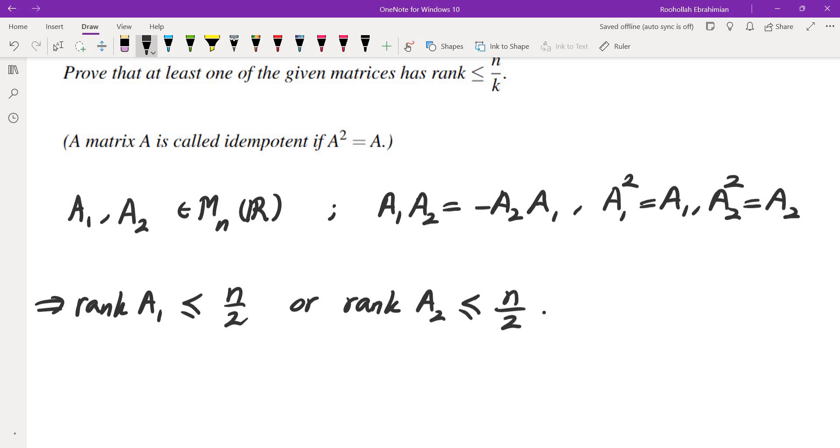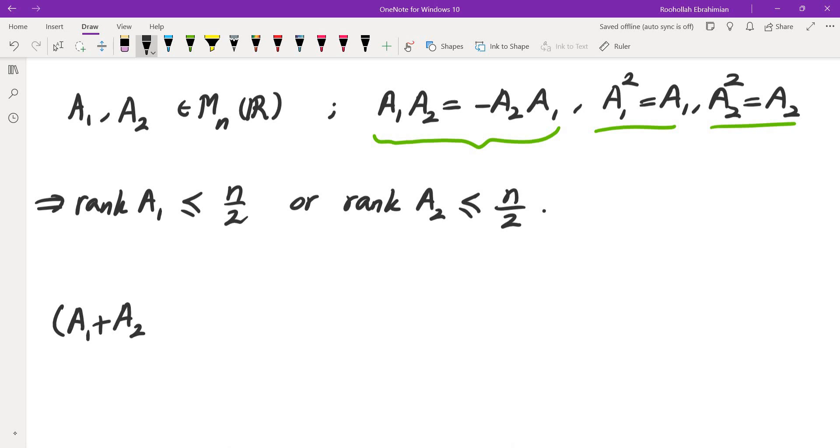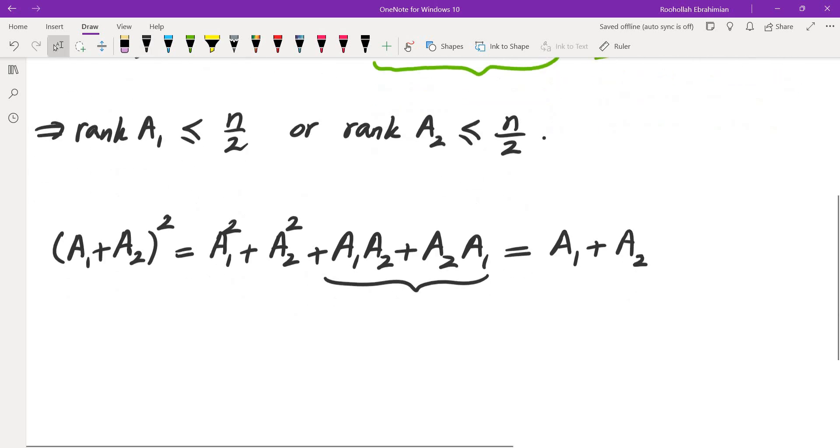So the first thing that came to my mind is I need to somehow use this equality that A1A2 is negative A2A1. Given that I have A1 squared and A2 squared, I probably need to consider A1 plus A2 squared, because the place where A1A2 and A2A1 appear is in A1 plus A2 squared. And if you expand this, you're going to get A1 squared plus A2 squared plus A1A2 plus A2A1. And this is really nice because A1A2 plus A2A1 is in fact 0 by the assumption. A1 squared is A1, A2 squared is A2. So this tells us that A1 plus A2 is also idempotent.